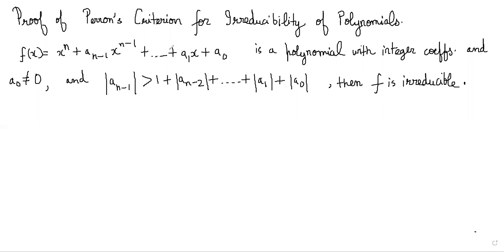This is Perron's criteria for irreducibility. It says f(x) equals x^n plus a_{n-1} x^{n-1} — a typical polynomial. If it has integer coefficients and a_0 is not equal to 0, and if the modulus of a_{n-1}, the second highest coefficient, is greater than the sum of all the other coefficients, then f is irreducible.